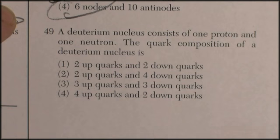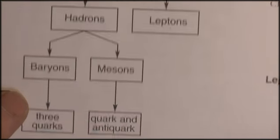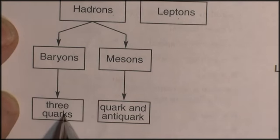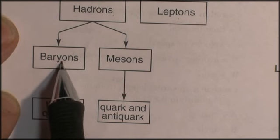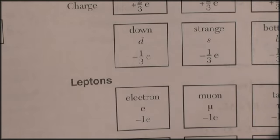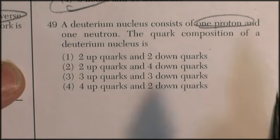Question 49: a deuterium nucleus consists of one proton and one neutron. The quark composition of a deuterium nucleus is... This is kind of a vocabulary one, but we can get some help. In the section on the classification of matter, we're told that baryons are made of three quarks. We have to remember that protons and neutrons are baryons. So you've got three quarks in there, and you've got up and down quarks.